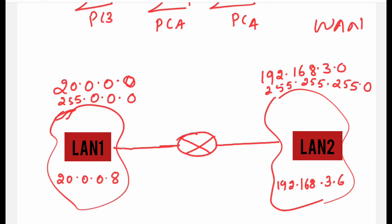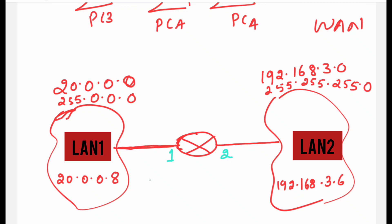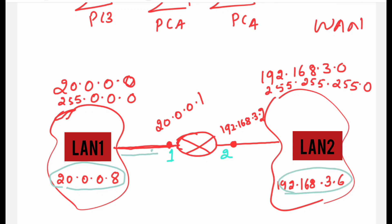If this PC wants to communicate with that destination, the packet travels from LAN 1 and reaches the router interface. We label these as interface 1 and interface 2. To make communication happen, the router interfaces also need IP addresses. Interface 1 gets an address belonging to the 20.0.0.0 network — say 20.0.0.1 — and interface 2 gets an address belonging to the 192.168.3.0 network — say 192.168.3.15.